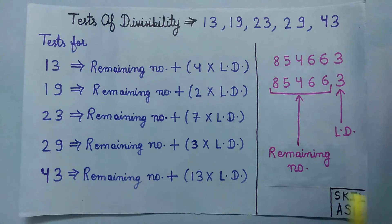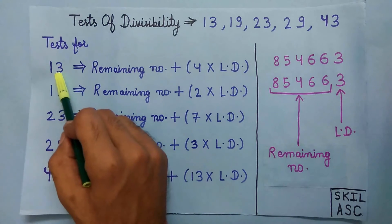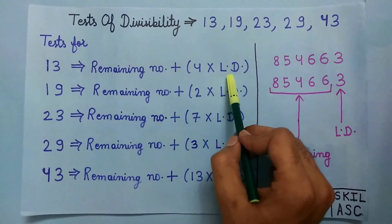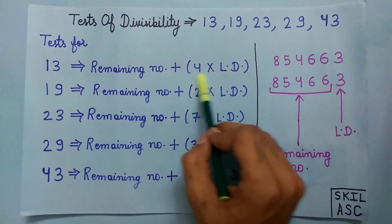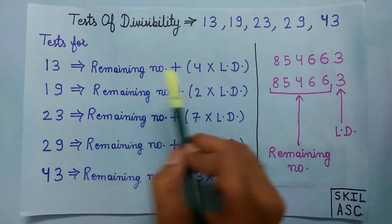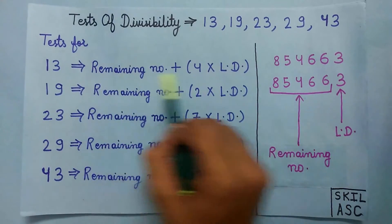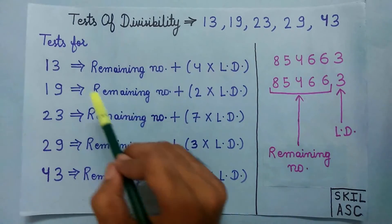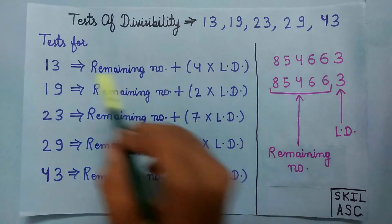Now, to check if a number is divisible by 13 or not, multiply the last digit by 4 and then add this to the remaining number. If this value is divisible by 13, then the original number is also divisible by 13.